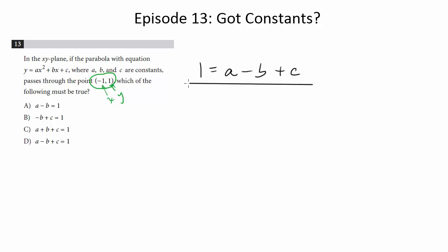So here is the relationship between the constants a, b, and c: a minus b plus c is equal to 1, and that's choice D. Don't let these questions intimidate you. Whether you're given the point or have to find it yourself, get that point or points, plug it in, and that's going to help you find the relationship necessary to get either the value of the constant or, in this case, how the constants relate to each other in an equation. So this one is D.